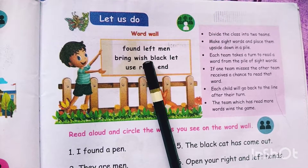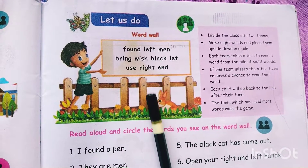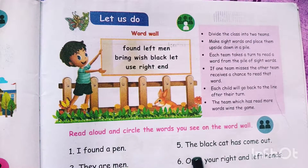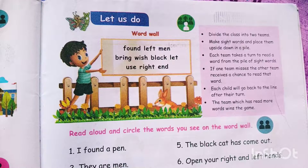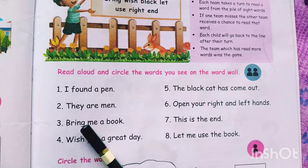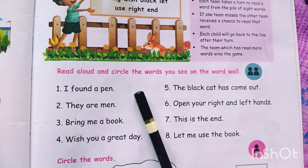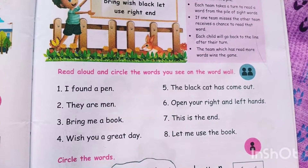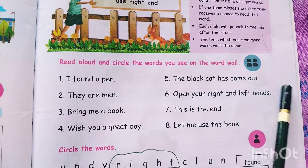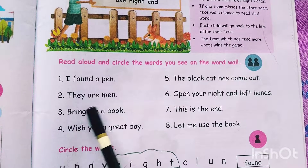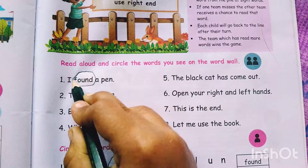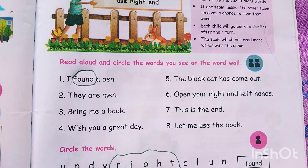Let us do Word Wall. The words are: found, left, membrane, wish, black. Let us use right, end. Read aloud and circle the words you see on the word wall. 'I found a pen.' Found is on the word wall, so let's circle found.